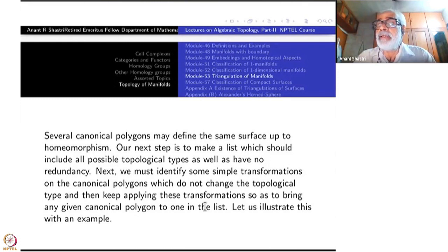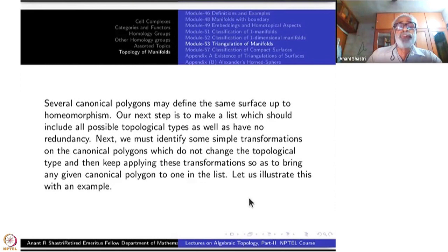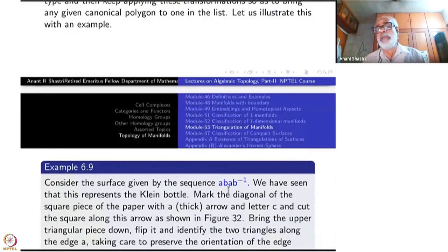Even cyclically different ones may define the same surface. Let us examine that. So consider the surface given by the sequence A, B, A inverse, B inverse. Just recall, this is a familiar one to you, namely, what you have? You have a rectangle. The side A and its opposite side are identified with the orientations coming in the same direction. The B and B inverse are identified with the opposite orientation.